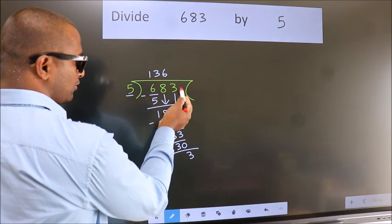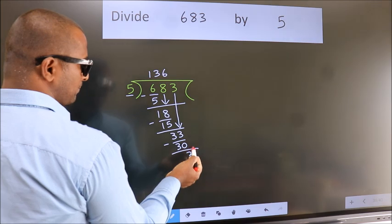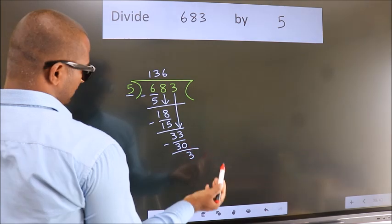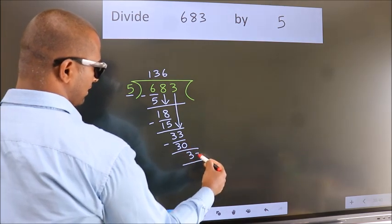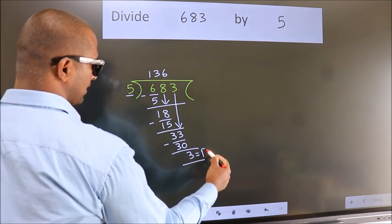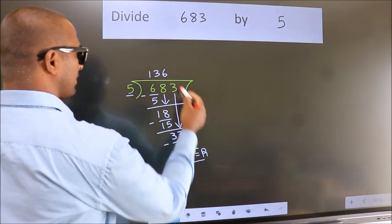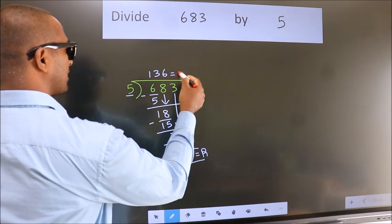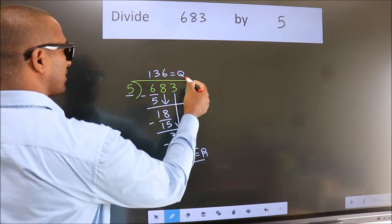No more numbers to bring down, so we stop here. This is our remainder. This is our quotient.